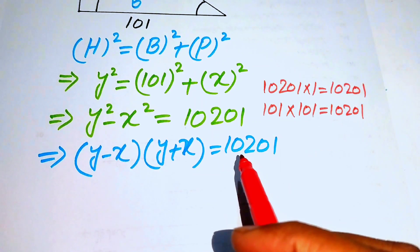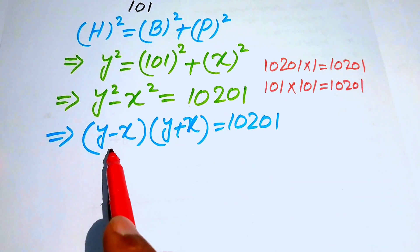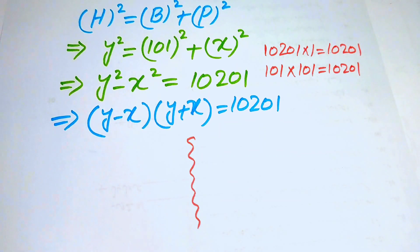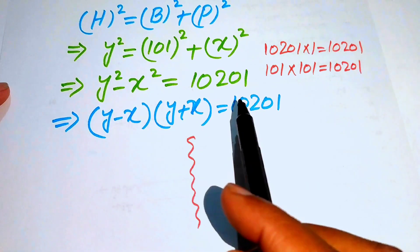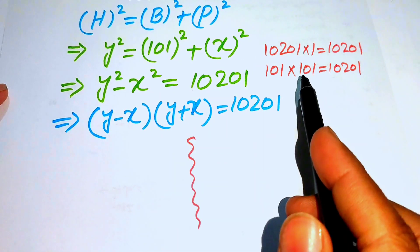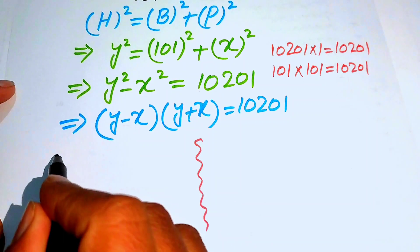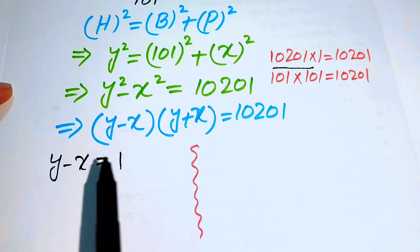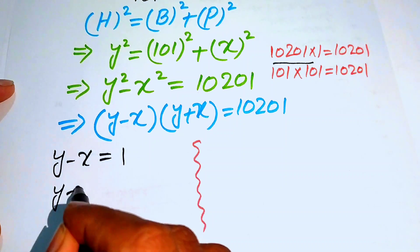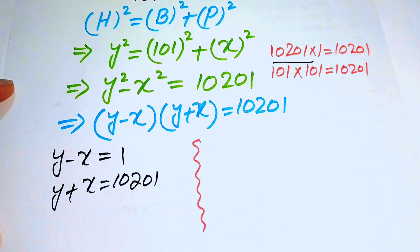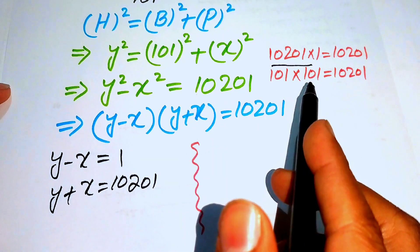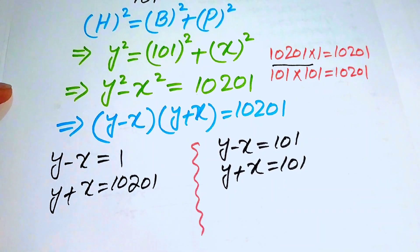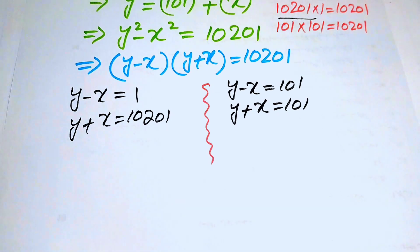Comparing the two factor pairs with (y − x)(y + x), we get two cases. Case 1: y − x = 1 and y + x = 10201. Case 2: y − x = 101 and y + x = 101.